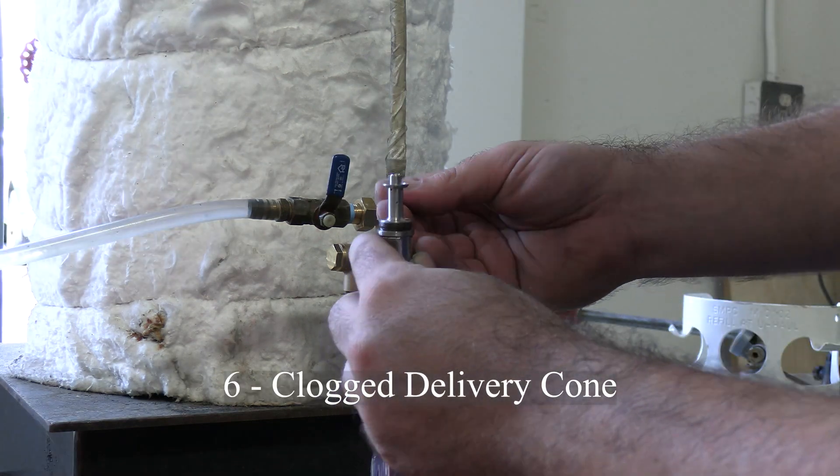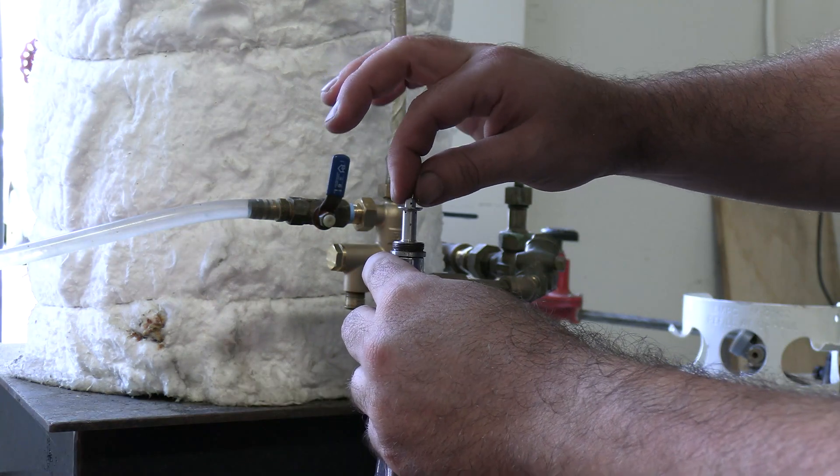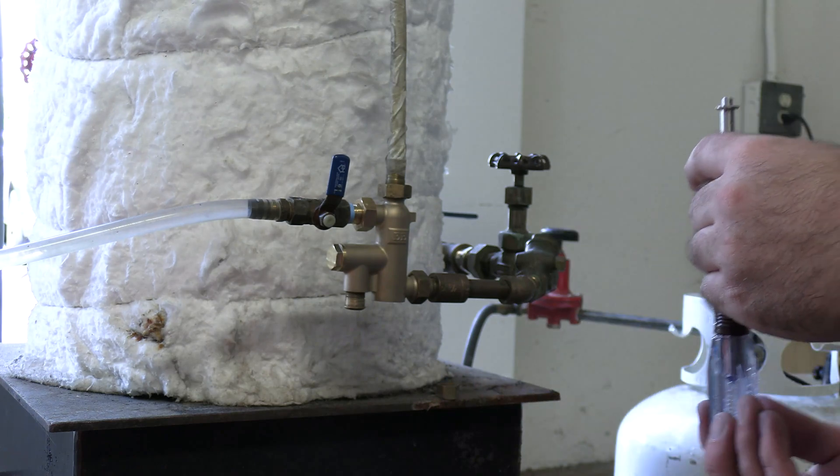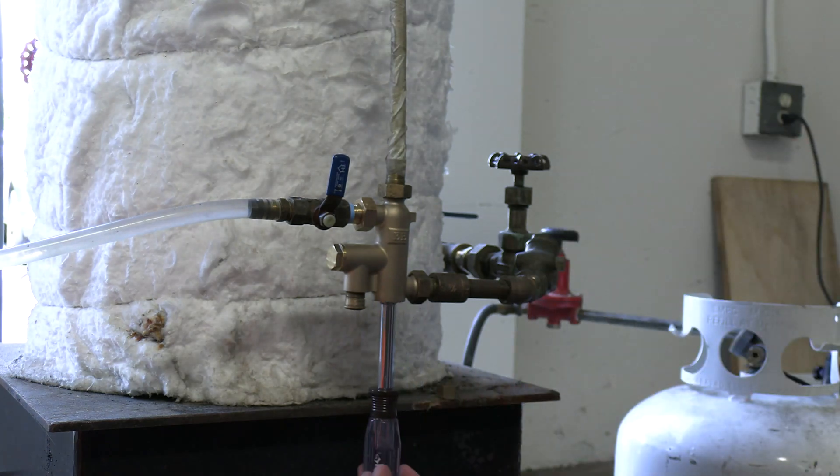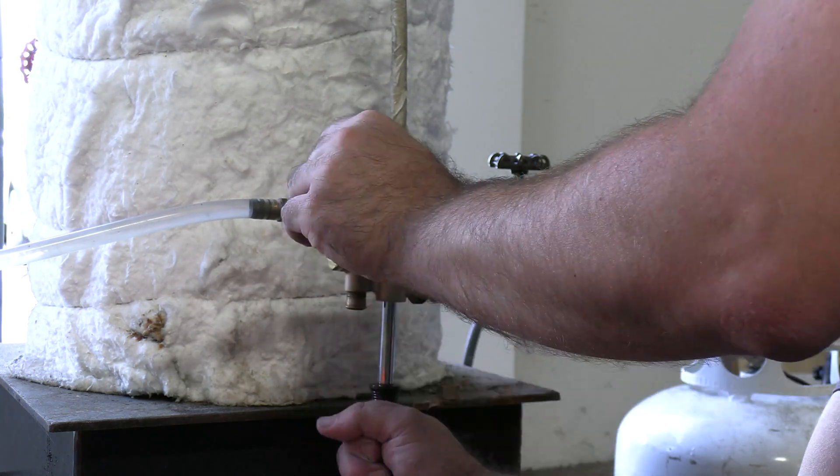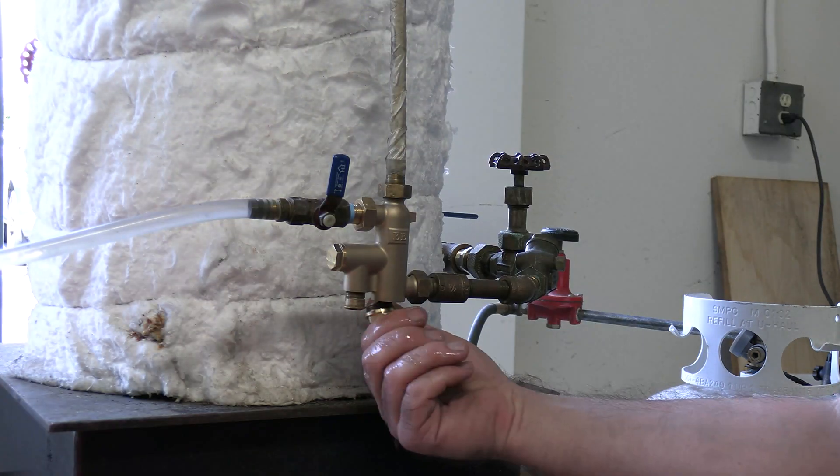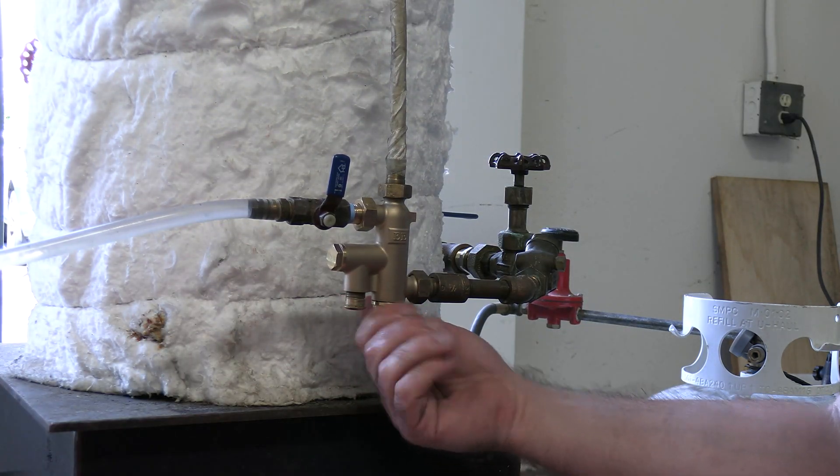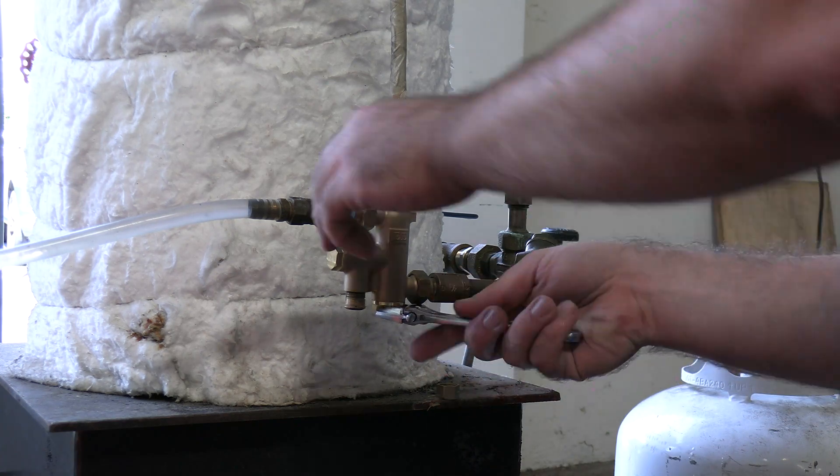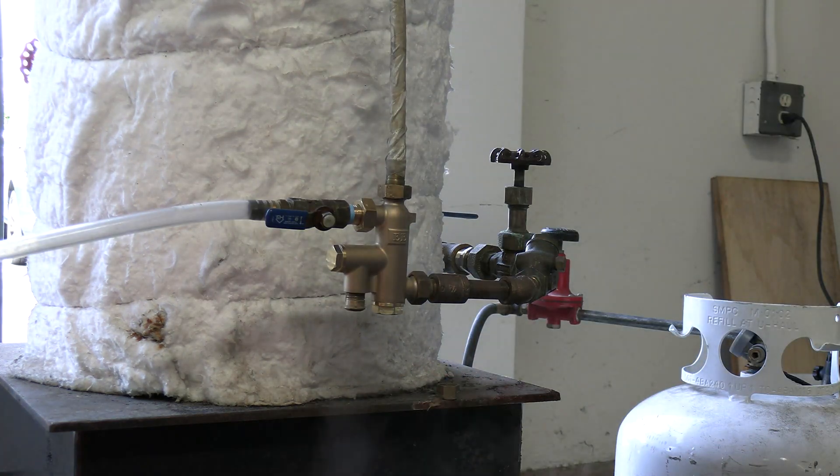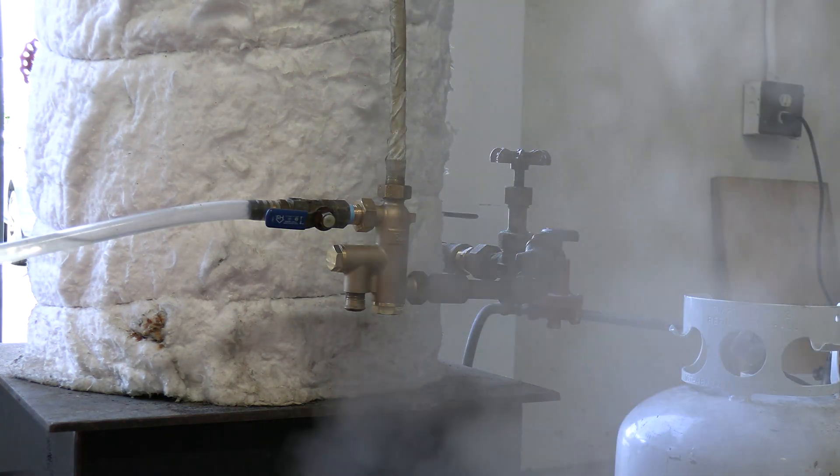A clogged delivery cone is by far the most common problem. A little piece of coal or shaving from the boiler makes its way into the injector and gets stuck in the small converging taper. You'll see right away the injector's ability to lift is pretty sluggish. This isn't always the case depending on how deep the debris is stuck, but it's a dead giveaway that there's something in there.